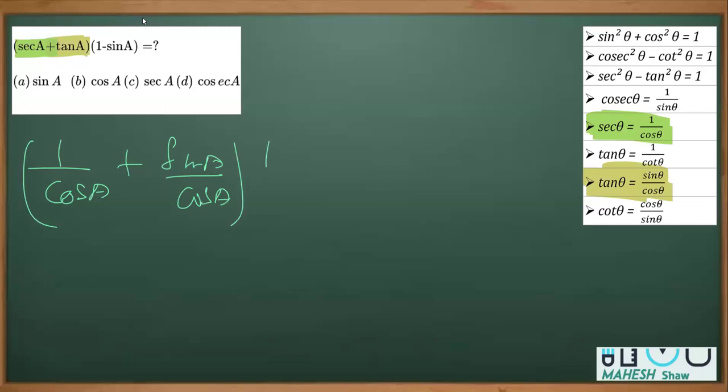That whole expression multiplied by (1 - sinA). Now if I simplify by taking LCM as cosA, I can write this as (1 + sinA)/cosA multiplied by (1 - sinA).